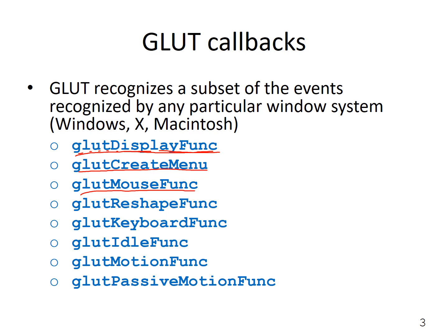GlutMouse function defines a callback function when a mouse is clicked — this is for mouse clicking only, as opposed to mouse movement, which I said incorrectly in the previous lecture. GlutReshape will execute if the window is reshaped. GlutKeyboard will execute if a key is pressed on the keyboard. GlutIdle identifies a callback function when the system is idle; we may want to put some animation on the screen, so the idle function gets executed every time the system is idle.